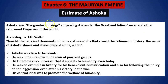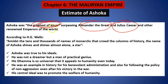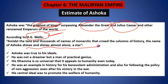Ashoka is considered as the greatest of the great kings, surpassing Alexander the Great, Julius Caesar, and other emperors. According to H.G. Wells — H.G. Wells ke nusar — inka naam sadiyon sadiyon tak ek sitare ki tarha chamakta rahega — Ashoka ka naam. He was such a great emperor.